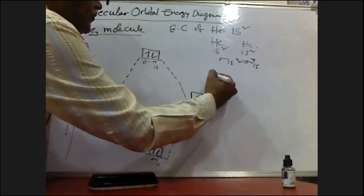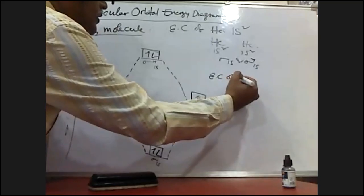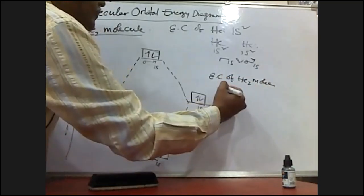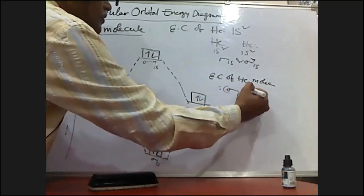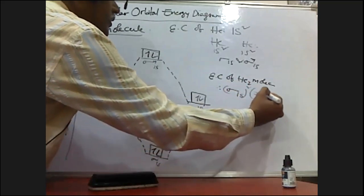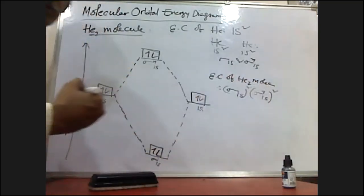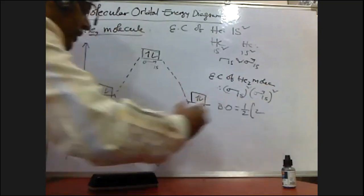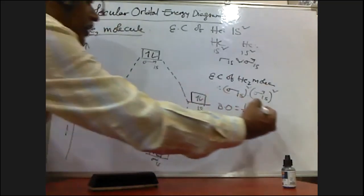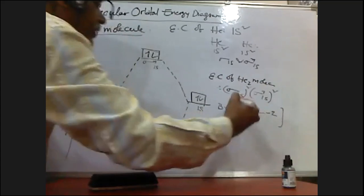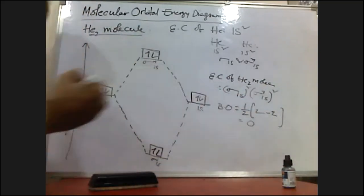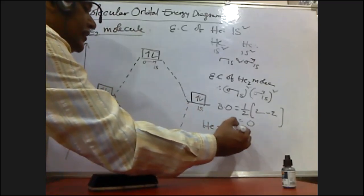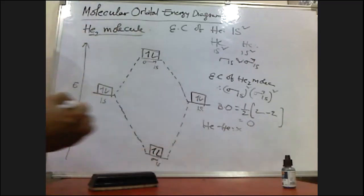So the electronic configuration of the He₂ molecule is sigma 1s² and sigma* 1s². What is the bond order? Bond order is half of (2 minus 2). There are two electrons in the bonding molecular orbital and two electrons in the anti-bonding molecular orbital. That's why the bond order is zero. If the bond order is zero, the He–He bond does not exist.